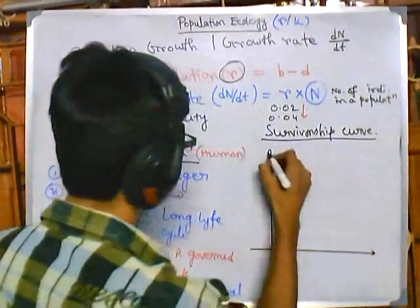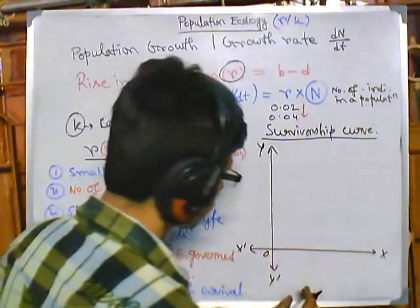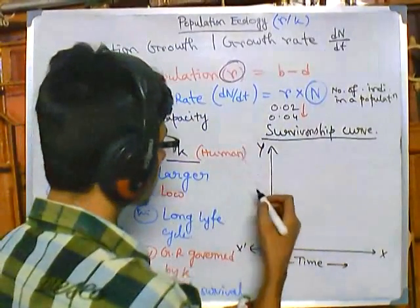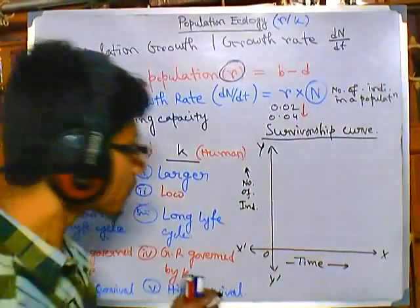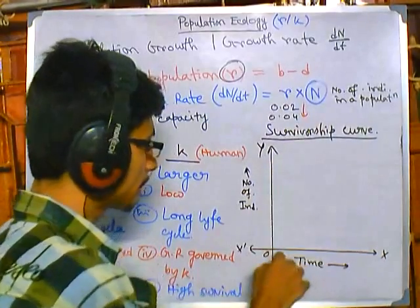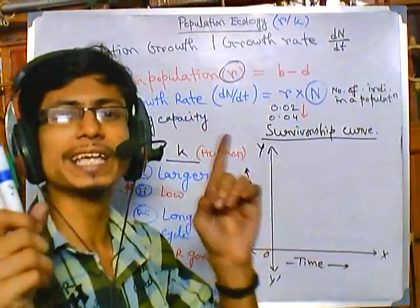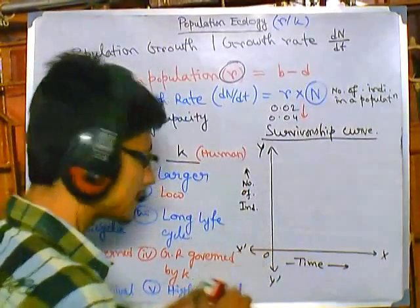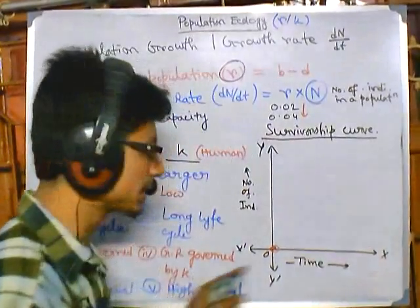The feature of the survivorship curve is that on the x-axis we put time — in years, days, or whatever unit is appropriate. On the y-axis we put the number of individuals. By drawing this graph, we start the time at zero, which means from the moment of birth. So the x-axis represents the age of the organism, starting at zero at birth.